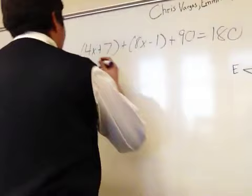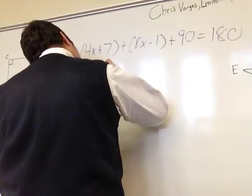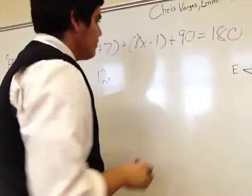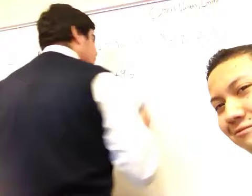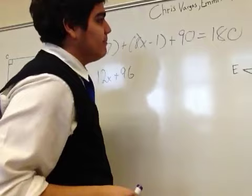As you can see, we combine 4X and 8X, which will give us 12X. First thing, done. Now we have to combine the other like terms. Positive 7, negative 1, and 90, which will give us 96. And we can't forget about our handy-dandy 180. Remember, this is an equation, so you've got to put an equal sign.